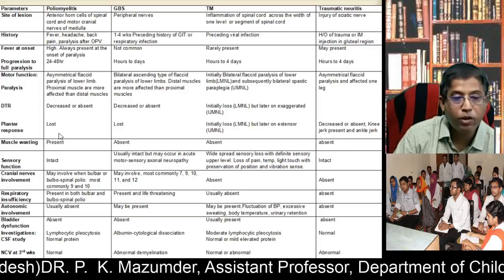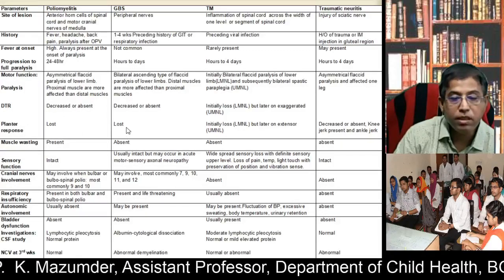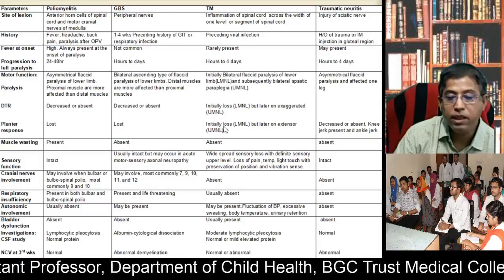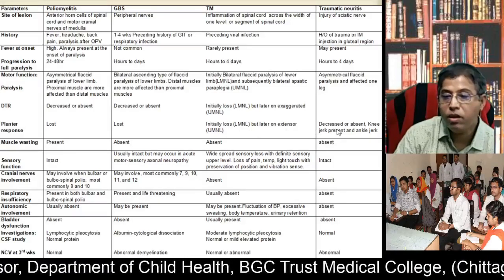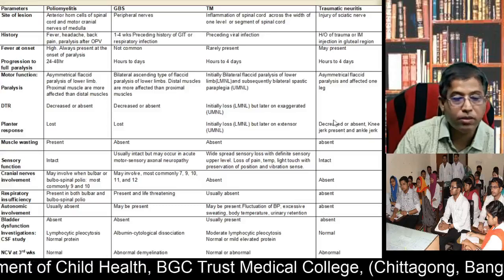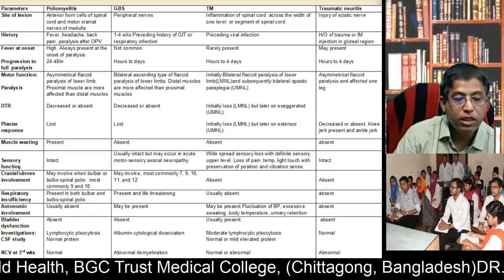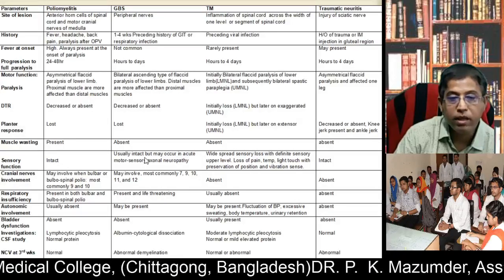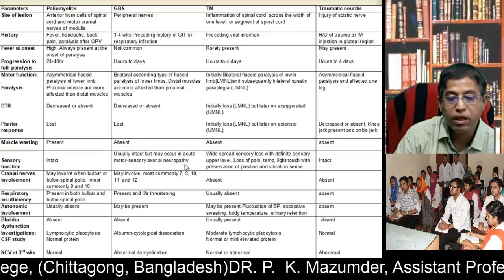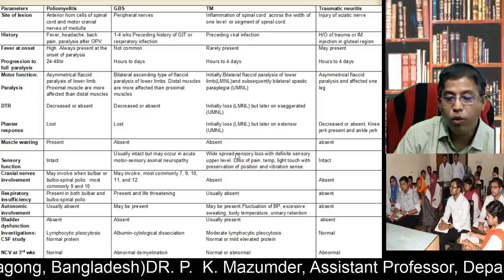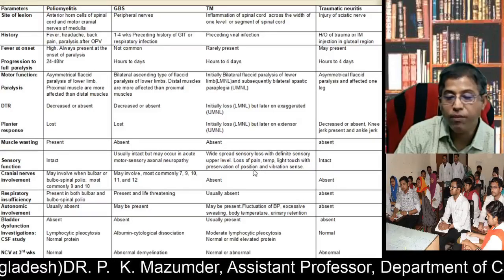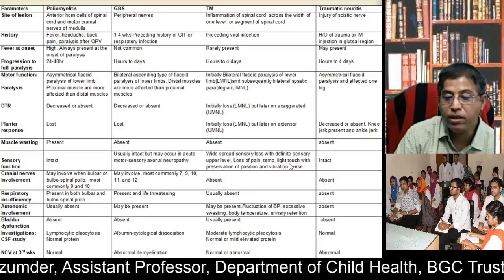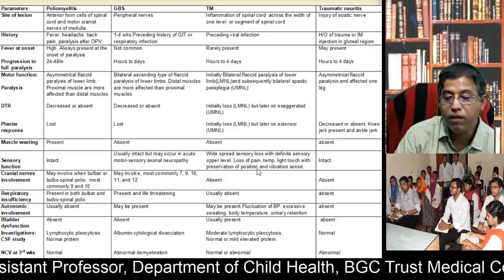Plantar response: lost in poliomyelitis, lost in GBS. In transverse myelitis, initially lost but later extensor. In traumatic neuritis, it may be extensor. Sensory functions: intact in poliomyelitis. In GBS usually intact but may be impaired in acute motor-sensory axonal neuropathy. In transverse myelitis, there is widespread sensory loss with a definite sensory upper level — very important — with loss of pain, temperature, and light touch, with preservation of position and vibration sense.